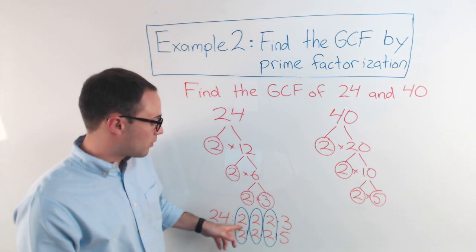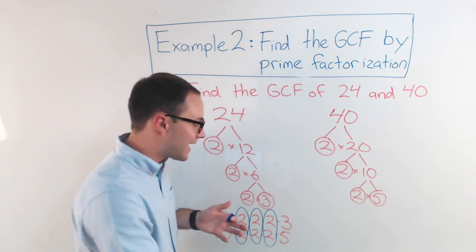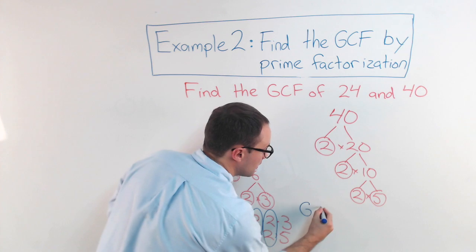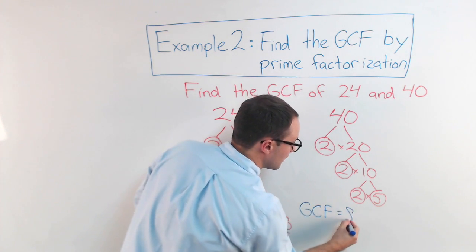So they've got 1, 2, 3 twos in common. So 2 times 2 is 4 times 2 is 8. So again, the GCF of 24 and 40 is 8.